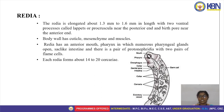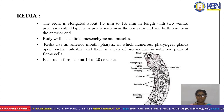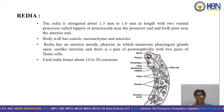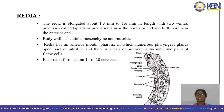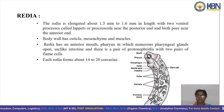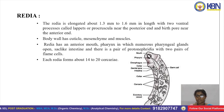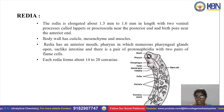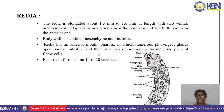The redia larva is elongated, about 1.3 mm to 1.6 mm in length, with two ventral processes called lappets or procurcula near the posterior end, and a birth pore near the anterior end. The body wall has cuticle, mesenchyme, and muscles. Redia has an anterior mouth, pharynx with numerous pharyngeal glands opening into a sac-like intestine, and a pair of protonephridia with two pairs of flame cells each. Each redia forms about 14 to 20 cercaria larvae.